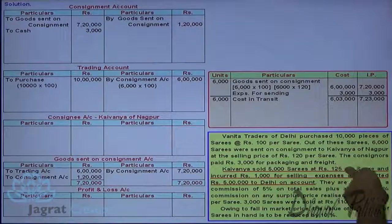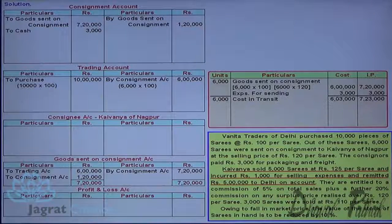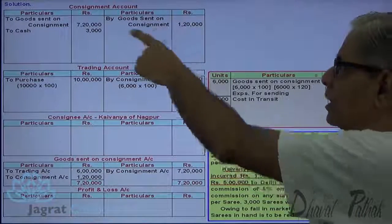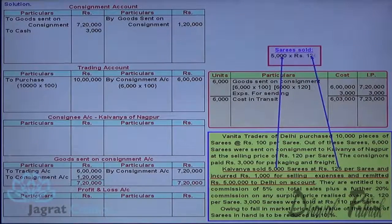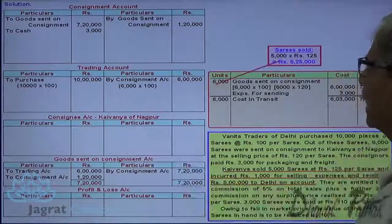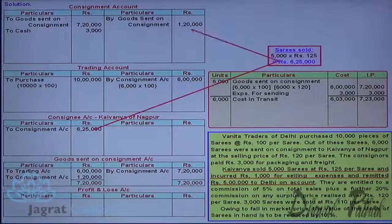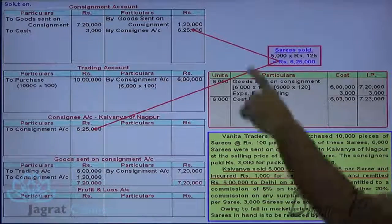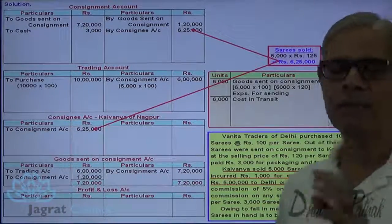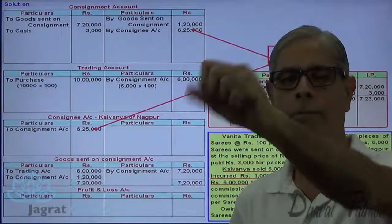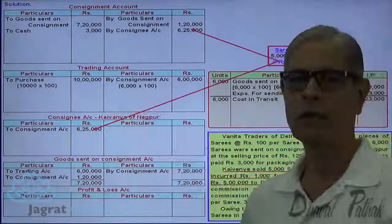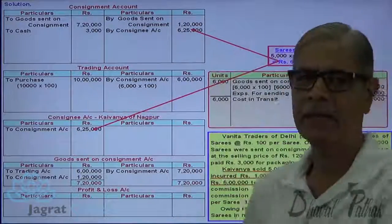Kaivanya sold 5,000 sarees at ₹125 per saree — 5,000 into 125 equals ₹6,25,000. Goods are sold, so the consignment account is to be credited and the consignee account is to be debited. Entry: consignee account debit to consignment account credit — ₹6,25,000. Goods of the consignor's ownership are sold by the consignee. Consignee is the receiver of funds, so consignee account is debited and consignment account is credited.